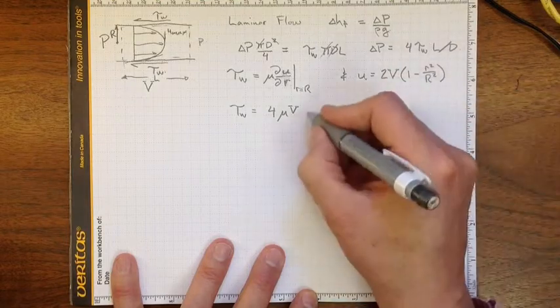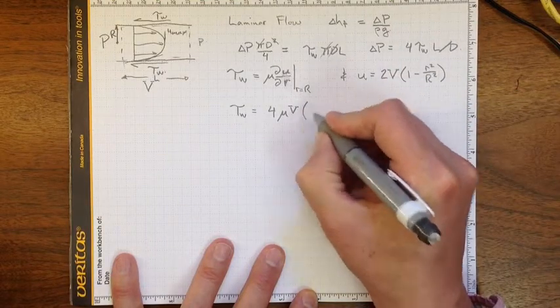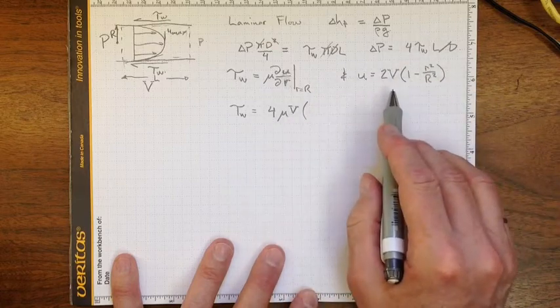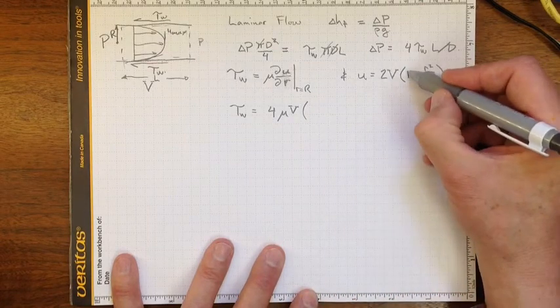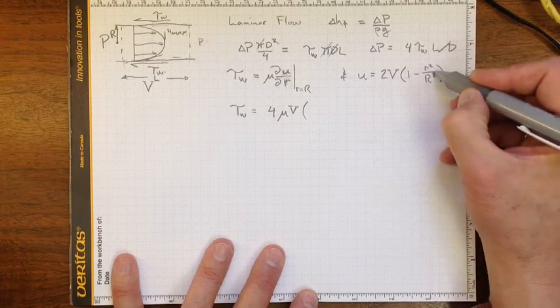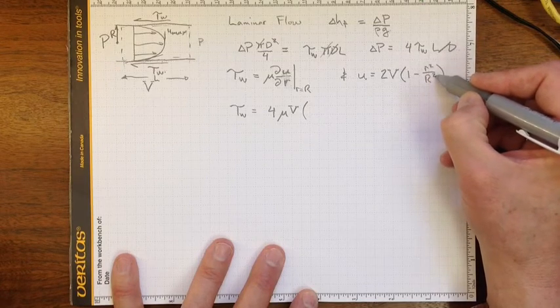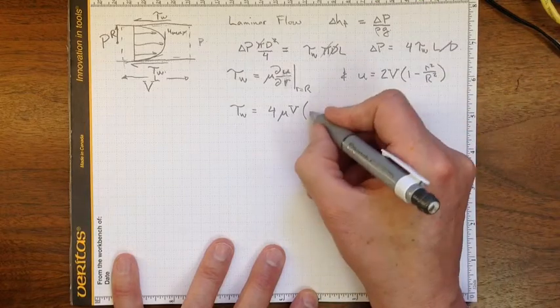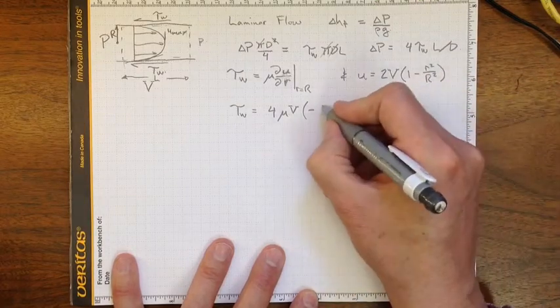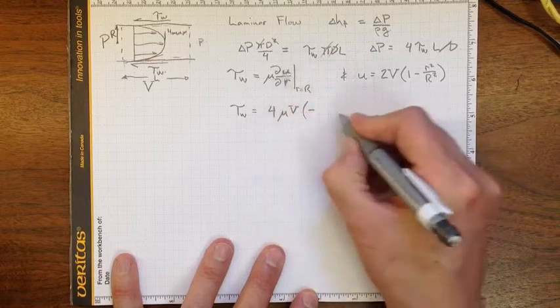there'll be a derivative of one, that's just zero, and the derivative here is going to be two r over r squared. And there's a negative sign. And the two went into the four out here.